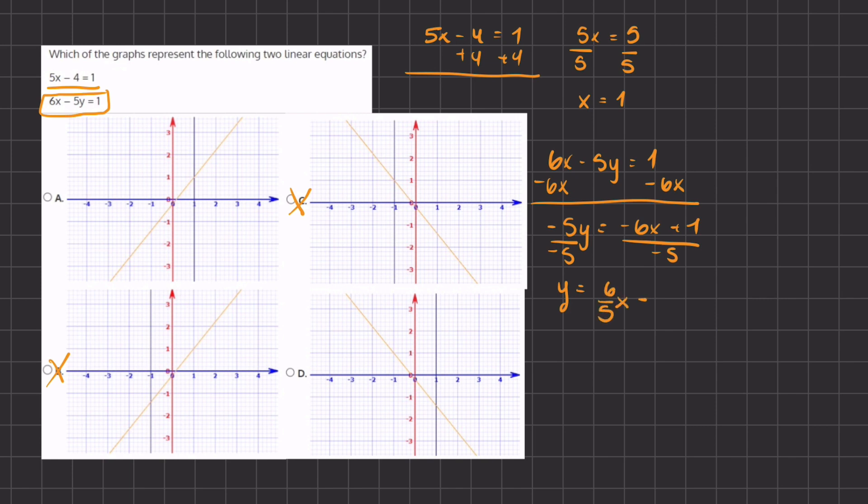Now if we take a look at our graphs, we want to find a positive slope because we have a positive 6 divided by 5, which is our slope, our m. And our y-intercept is going to be negative 1 divided by 5. So if we take a look at answer A and D, the graph A represents a positive slope, and we want to find an intercept at negative 1 divided by 5. As we can tell here, the intercept is right beneath the 0, which represents this negative 1 divided by 5.